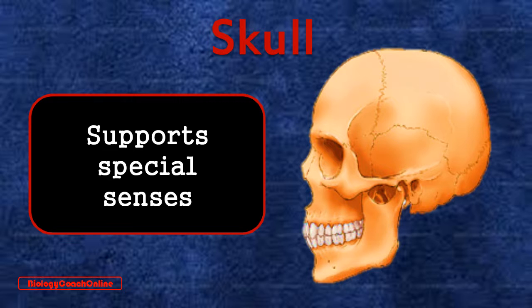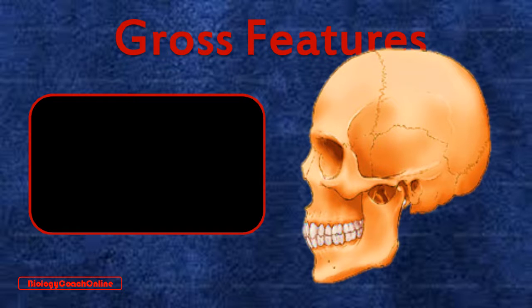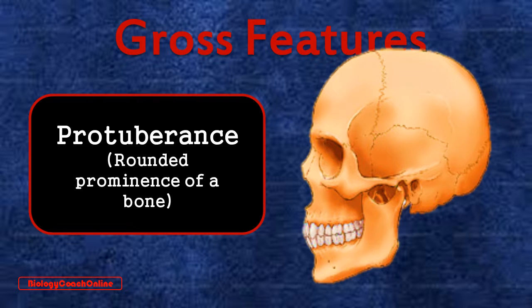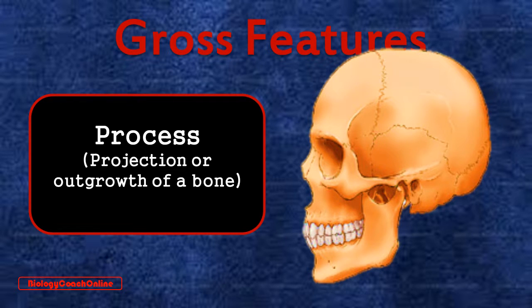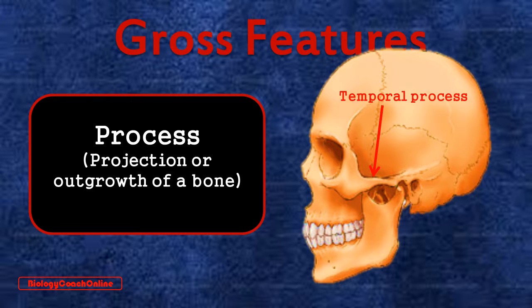Let's now quickly review a few gross anatomical features which will help you recognize the bones of the skull. You will use these features later as landmarks to identify various bones. First we have the protuberance — a prominent, usually rounded swelling or lump that sticks out from the surface of the bone. An example is the mental protuberance, or your chin bone. A process is a projection or outgrowth of a bone, representing a significant extension to the main body of a bone. An example is the temporal process of the zygomatic bone that forms the zygomatic arch.